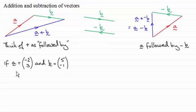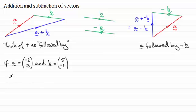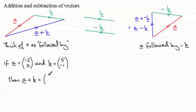Here's an example that illustrates this point with a graphical representation. Let's say we've got vector a given by the column vector (-2, 3), and vector b given by the column vector (5, -1). When adding the two vectors a plus b, all we need to do is add the top elements together and the bottom elements together — we add the components. So we have minus two plus five, giving us three, and three plus minus one gives us two. So we get the column vector (3, 2).